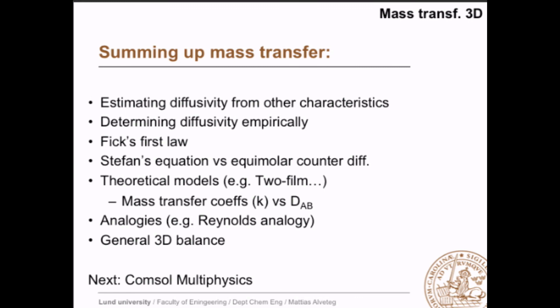To summarize this course so far with respect to mass transfer, we have shown how you can estimate diffusivity from other characteristics. We have shown how you can determine diffusivity empirically, or rather that's what you're supposed to do in compulsory task 2. We have looked into Fick's first law and the special cases: Stefan equation, which is diffusion through stagnant component and equimolar counter diffusion. We have looked into a number of theoretical models and analysis, where we can relate mass transfer coefficient to the diffusivity. And we looked into analogies, or rather the Reynolds analogy, which is a special case of Chilton-Colburn's analogy. And today we looked into also the 3D balance. Next up is COMSOL Multiphysics, where you're supposed to solve a few tasks.